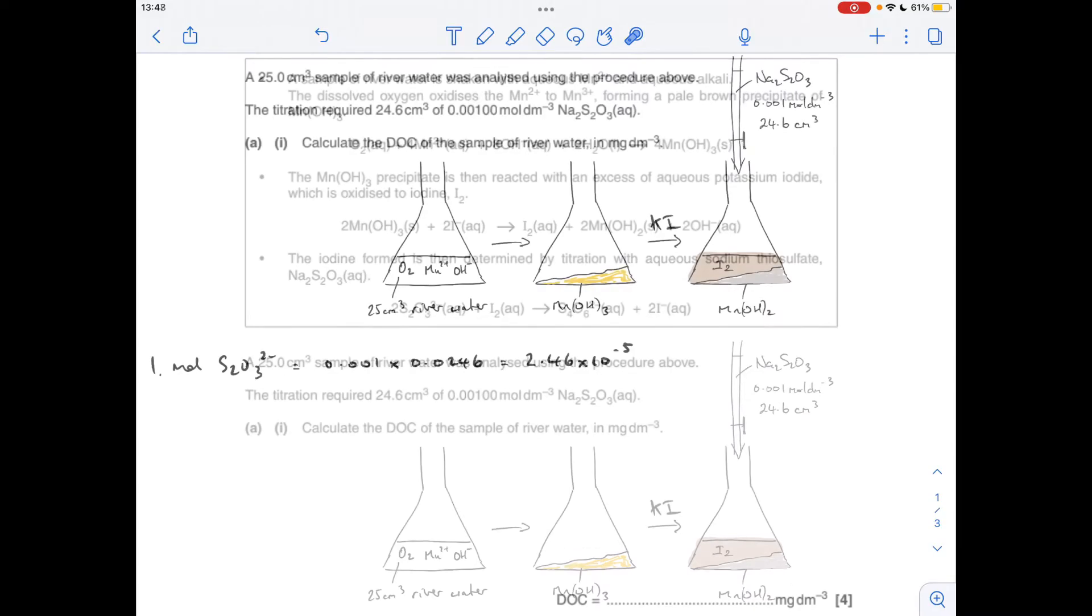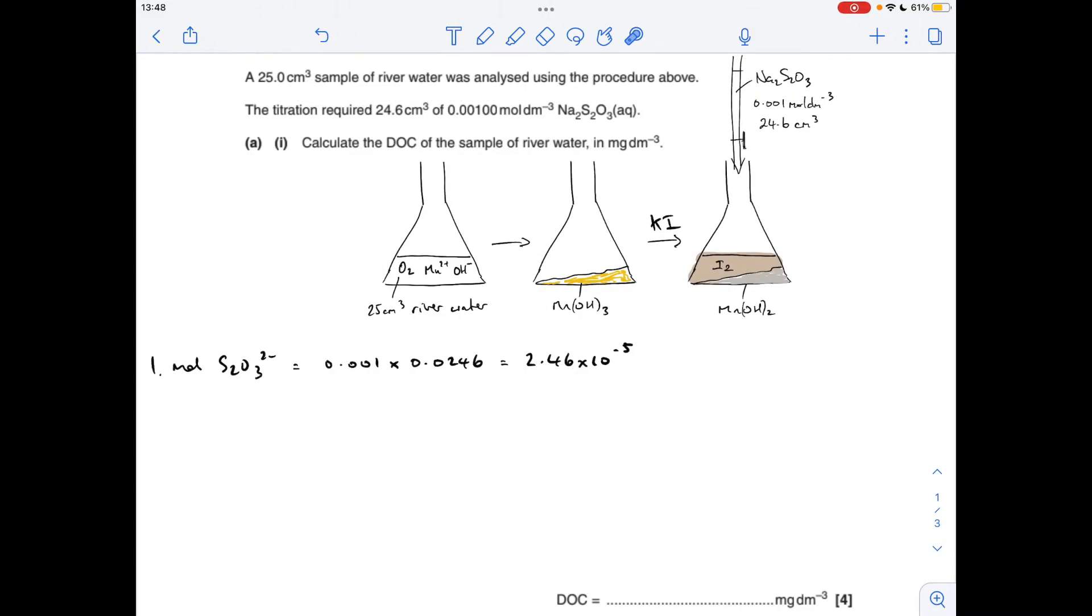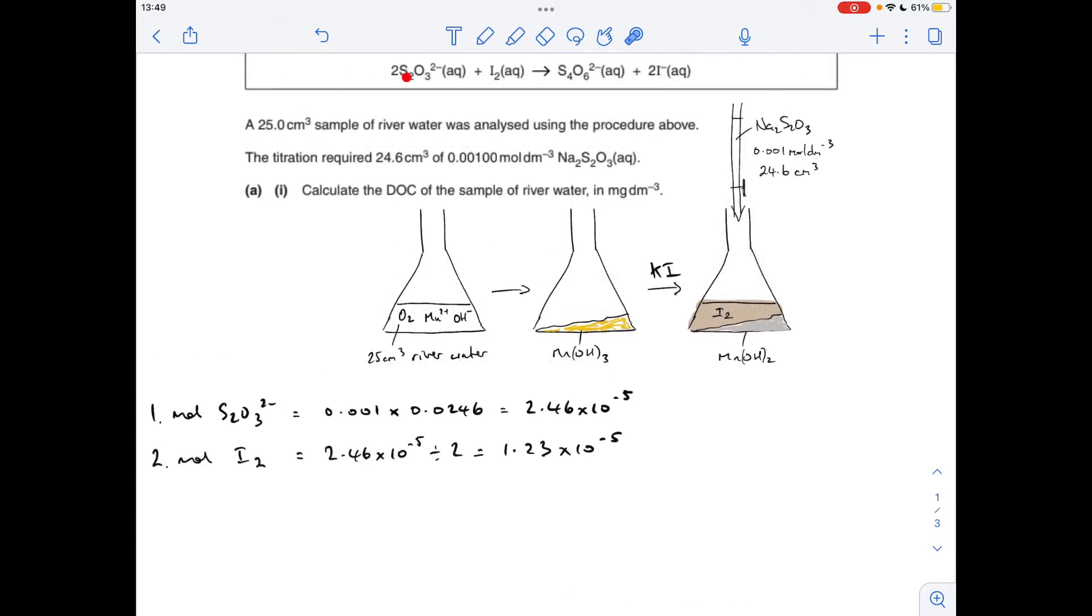So the first thing I'm going to do is calculate the moles of thiosulfate ions in the sodium thiosulfate, so that's just concentration times volume in decimeters cubed, 2.46 times 10 to the minus 5. And then using the equation for the titration, we can see that the moles of iodine present will be half that, so that's 1.23 times 10 to the minus 5.